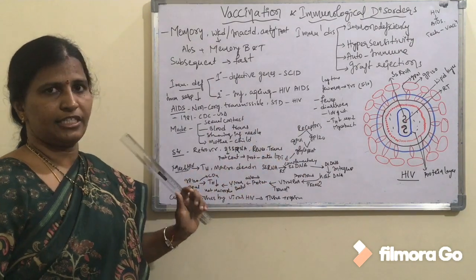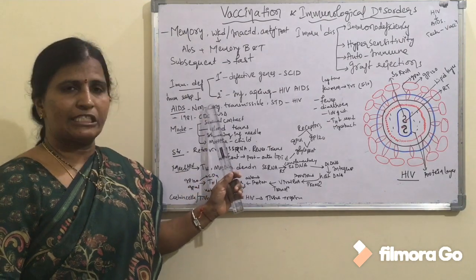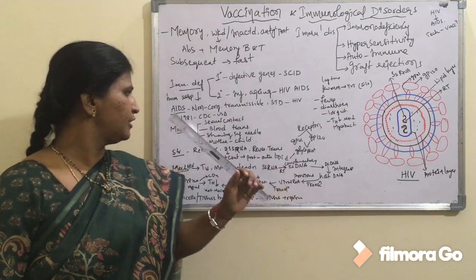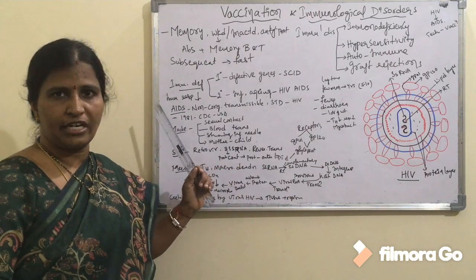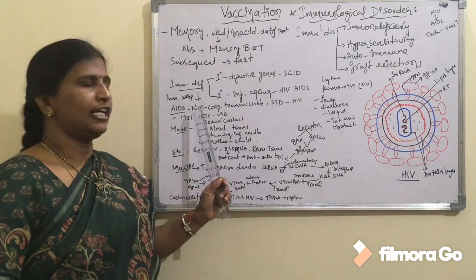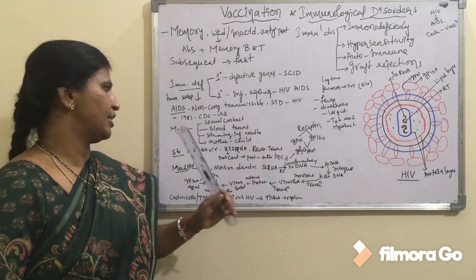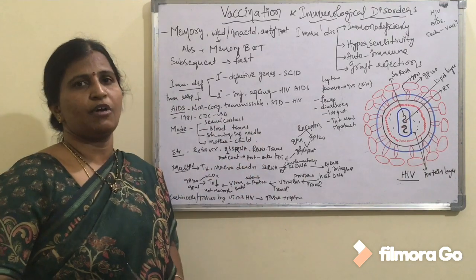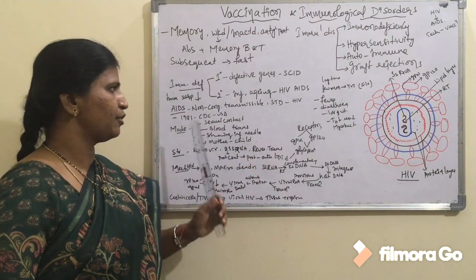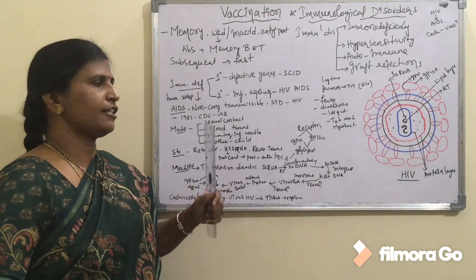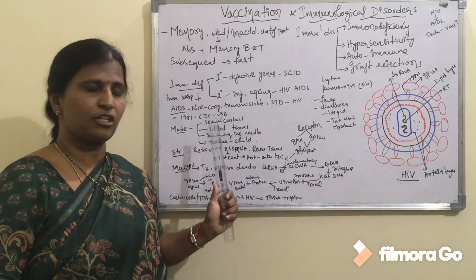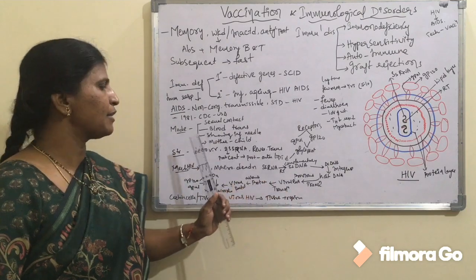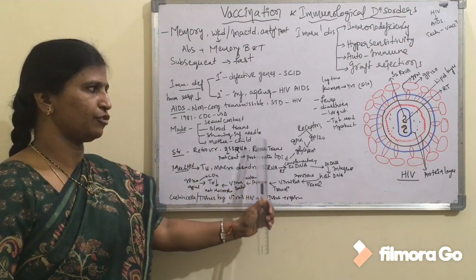Coming to AIDS in detail, it is a non-congenital, transmissible, and sexually transmitted disease. The first case of AIDS was reported in 1981 by the CDC in the US. Regarding the mode of infection, it can be transferred from one person to another through sexual contact, blood transfusion, sharing of infected needles, and from an infected mother to the child.